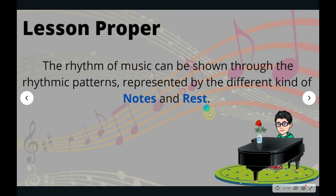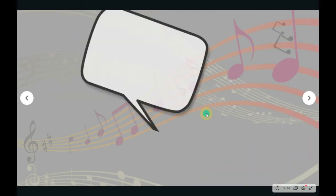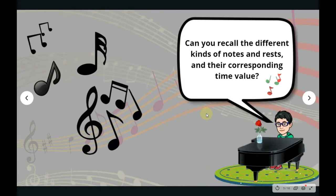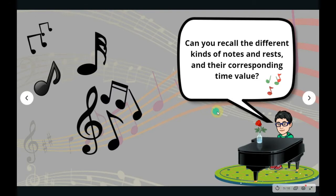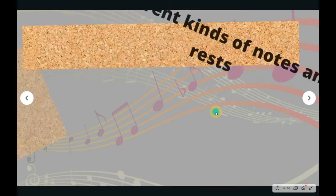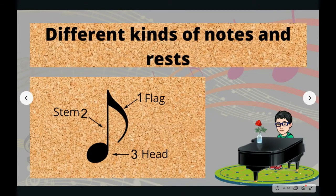The rhythm of music can be shown through the rhythmic patterns represented by the different kinds of notes and rests. Can you recall the different kinds of notes, rests, and their corresponding time value? Here are the different kinds of notes and rests. But first, we're going to identify the parts of notes: number one, we have the flag; number two, we have the stem; number three, we have the head.